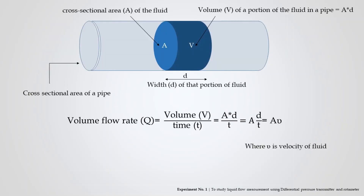The volume V of a portion of the fluid in the pipe is equal to the cross-sectional area A of the fluid times the width D of that portion of the fluid. Thus, the equation for volume flow rate reduces to: volume flow rate Q equals cross-sectional area A of the fluid times velocity V of the fluid.